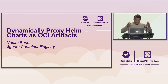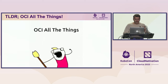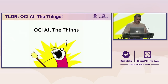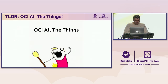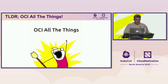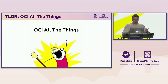But before we go into the details, there is one important thing you should take away from the next four minutes: you should take away that OCI, all the things, is very important. And why it's important? Because it's easier than you think. You can use it also for your own internal artifacts very efficiently and easily.